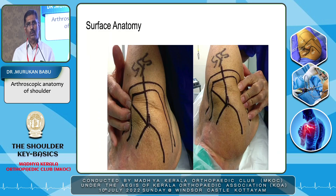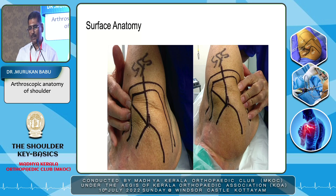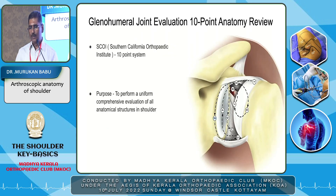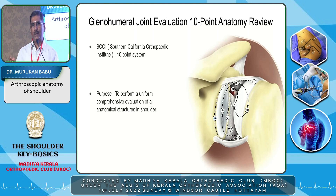This is the surface anatomy — you all know how to draw the shoulder surface anatomy; you palpate the inferior border of the clavicle, the acromion, and the spine — and those things will be dealt with in detail by the coming speakers. My topic is the arthroscopic anatomy, which will be covered with a 10-point anatomy review. The position of the scope is important, as the anatomical structures depend on from where you are viewing them. This system is developed by the Southern California Orthopedic Institute.